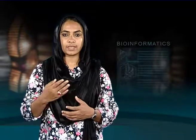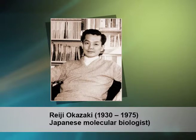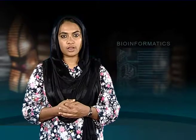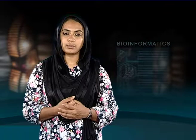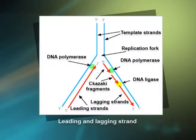During elongation, a new strand of DNA is always synthesized in the 5' to 3' direction. Okazaki found that one of the new DNA strands is synthesized in short pieces, now called Okazaki fragments. This led to the conclusion that one strand is synthesized continuously (the leading strand, in which 5' to 3' synthesis proceeds in the same direction as replication fork movement) and the other discontinuously (the lagging strand, in which 5' to 3' synthesis proceeds opposite to fork movement).